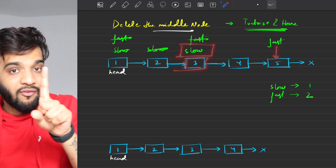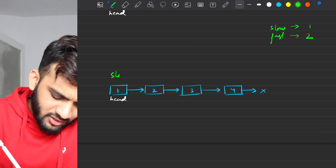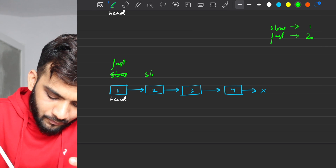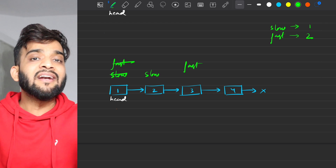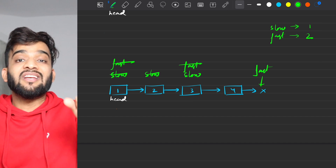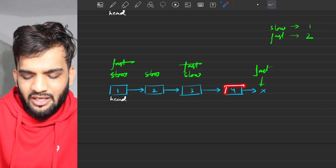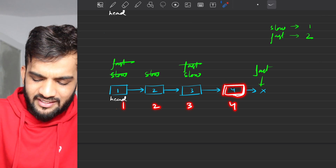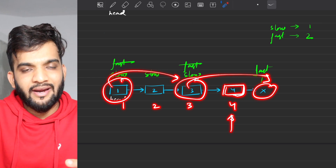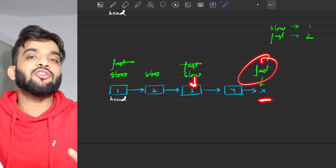When fast reaches the last node in an odd-length list, slow is pointing to the middle node — achieved in one pass. In an even-length linked list, we do the same: slow and fast both start at head. After two steps of simultaneous movement, fast reaches null. For even-length lists, fast reaches null because the even-index jumping means it never lands on the last node — and when fast reaches null, slow points to the middle.